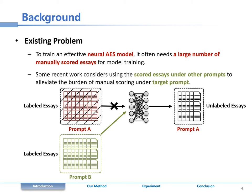But due to the differences among prompts such as score range, topic, and difficulty, this cross-prompt method often performs worse than the prompt-specific method.